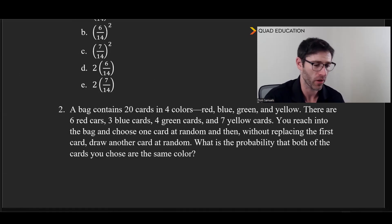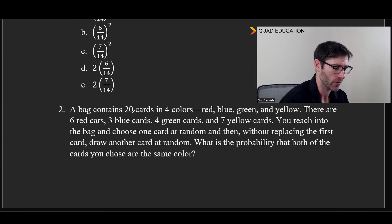And for my second practice problem here, it's more free response. So see how you do with this one. All right, let's take a look. So a bag contains 20 cards in four colors: red, blue, green, and yellow. There are 6 red, 3 blue, 4 green, and 7 yellow. And so that matches up. You reach into the bag and choose one card at random, and then without replacing - so no replacement - the first card, draw another card at random. What's the probability that both of the cards you choose are the same color? So this is really interesting, because we have multiple situations here. We'll basically take one of these at a time.